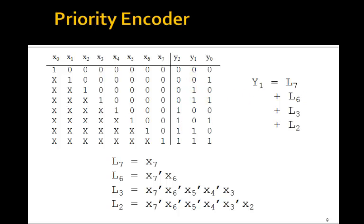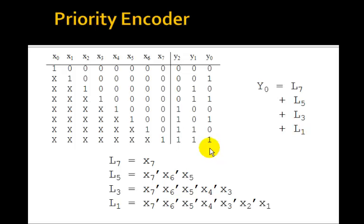And finally, y0 is L7 or L5 or L3 or L1. And L1, you see, all of these have to be 0 except 1. So it's not x7 and not x6 and not x5 and not x4 and not x3 and not x2 and x1. So those are how you find the logic equations for a priority encoder.